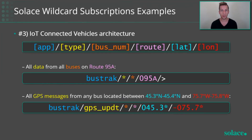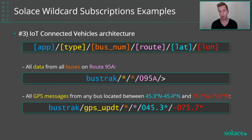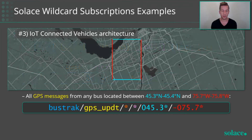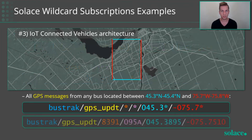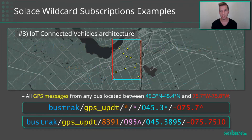For our IoT bus application, say you want to listen to all data coming out of route number 95 — all buses, regardless of whether they're positional updates, status messages, or trouble communications. You can do that with a combination of the single-level and multi-level wildcard. More advanced: since latitude and longitude are encoded in the topic string, you can use the prefix wildcard — subscribing to 45.3* — to match anything from 45.30 all the way up to 45.39999, giving you an effective range. Similarly for longitude, this essentially creates a geographic bounding box subscription. As buses drive through this area publishing their location as part of the topic string, they'll match this subscription until they leave the area.